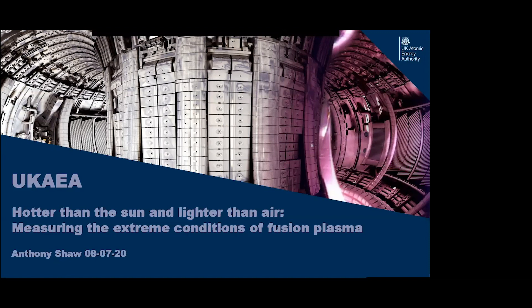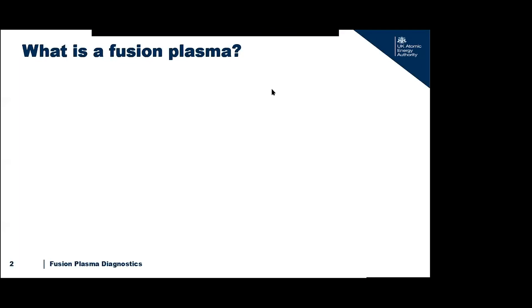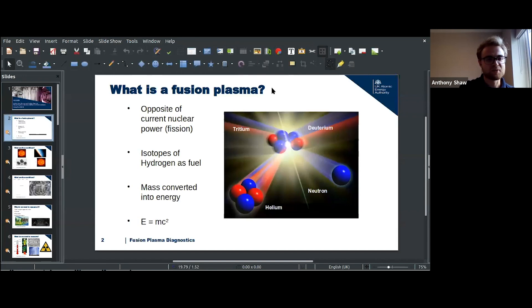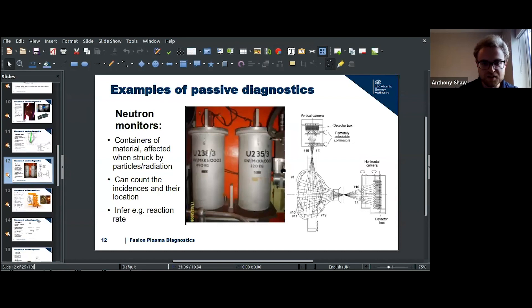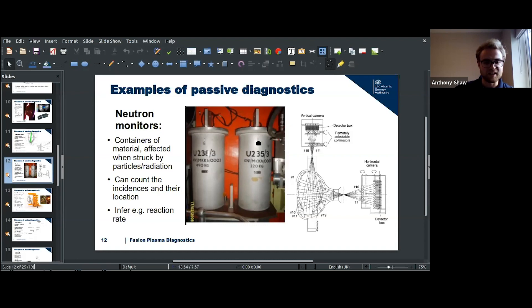On the uranium enrichment level: I'm afraid that's one I'll have to admit I don't know. The fact that they're separated by isotope — one labelled U-238 and one U-235 — suggests the 238 is incredibly low enrichment. I don't know if the 235 is slightly higher than standard or pure 235 — probably not pure 235, as that would be pretty hard to get. It's certainly a question I can take to those in charge of the neutron monitors if you're interested.